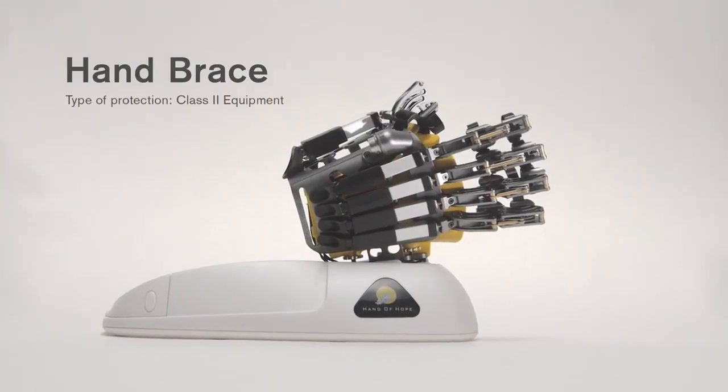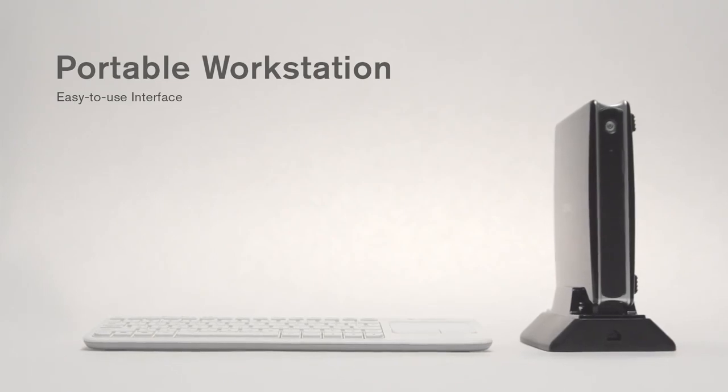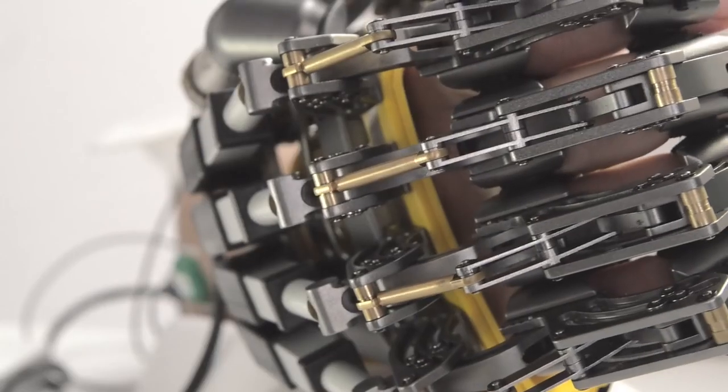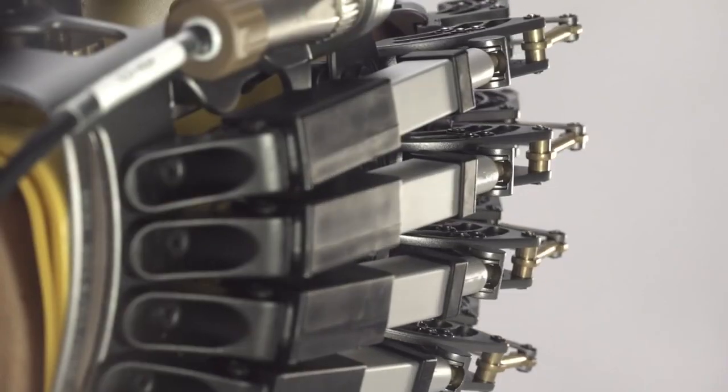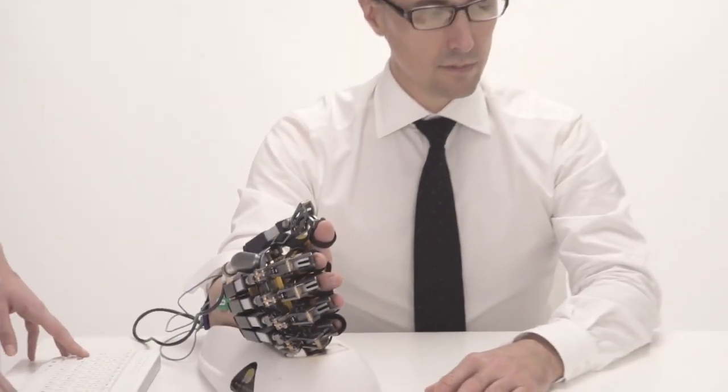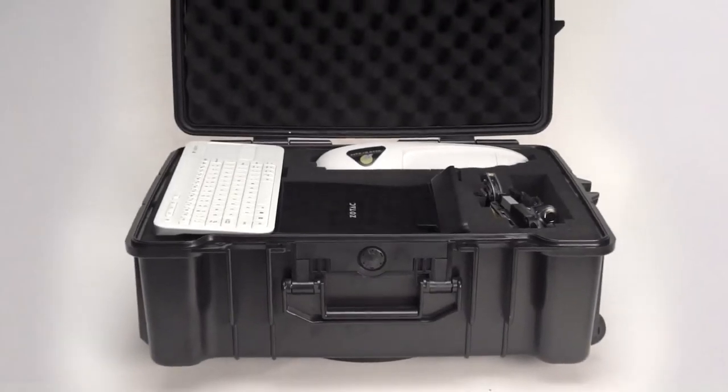Hand of Hope is an innovative, active, and assistive robotic device which uses EMG signals and exoskeleton to help patients in motor relearning after brain injury or stroke. Learn more about Hand of Hope at Rehab-Robotics.com or order a trial now.